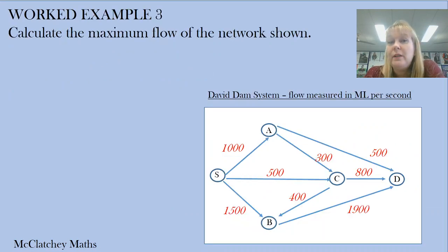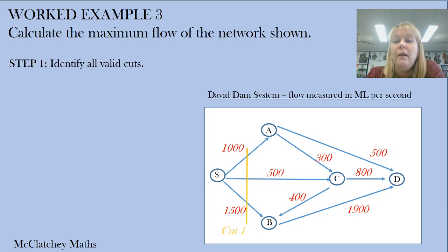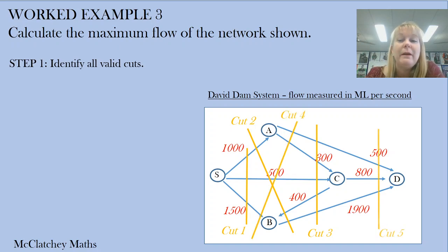Let's have a look at worked example three: calculating the maximum flow of the network shown. It's the David Dam system. You'll notice the flow backwards from C to B - if we were to make a cut through that edge, we would not include it because it's flowing back towards the source. First, we're going to identify all our valid cuts through the network. I found a few - you might be able to find more, maybe I've missed one or two. If you draw a squiggly line, you might find more cuts. We've got five here to look at.